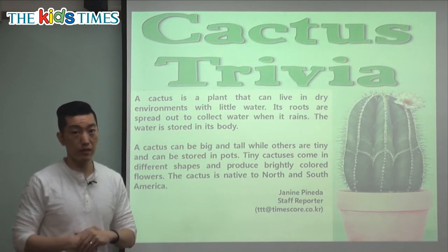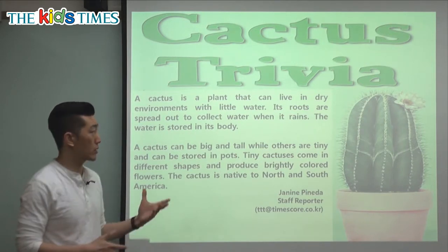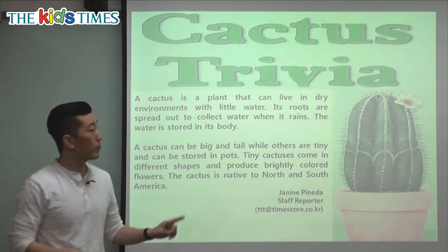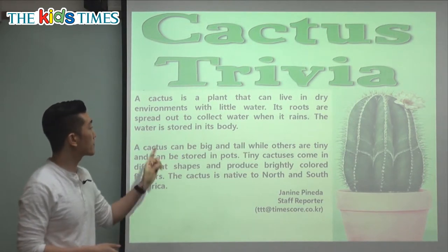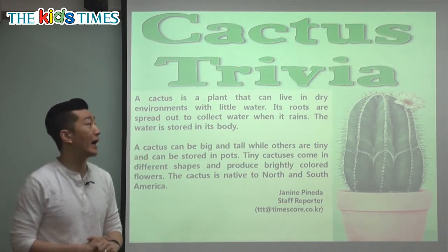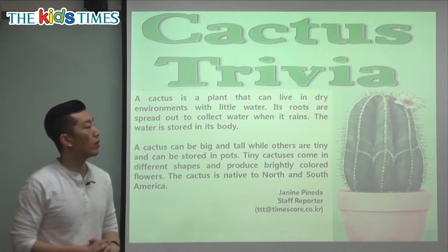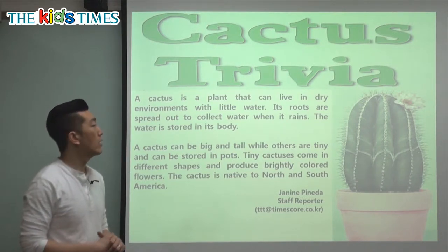We live in a city environment where there are a lot of buildings and a lot of people. But where can we find cactuses? We can find them in very dry and hot places. It says a cactus can live with very little water, so it doesn't need a lot of rain.